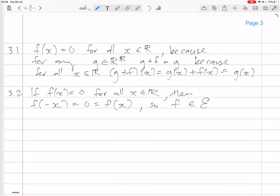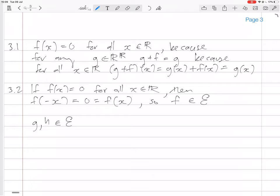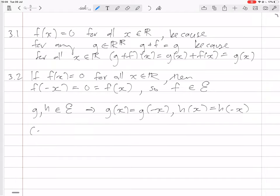Now you want to take two different functions. So let's take g and h in E. Now they're in E, so that means that g of x equals g of minus x, and h of x equals h of minus x. We want to see what g plus h of minus x is. It equals, of course, g of minus x plus h of minus x.